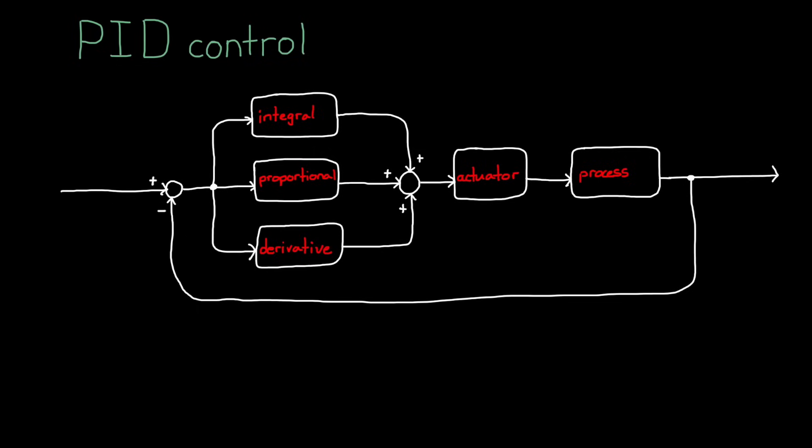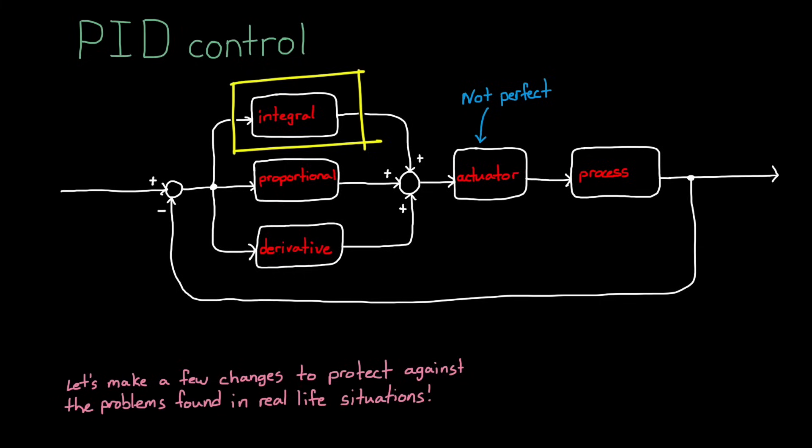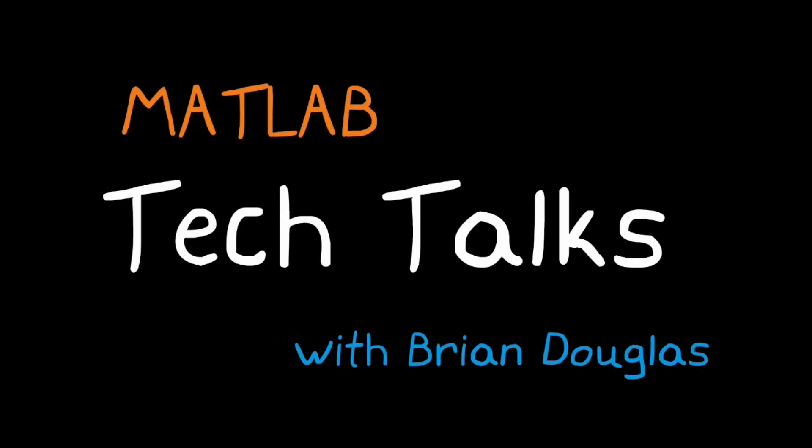So here's the problem. In real life, actuators aren't linear systems. They can't perfectly follow any arbitrary command given to them. There's backlash and rate constraints and saturation to name just a few. And these limitations can wreak havoc through an ideal PID controller like the one we described in the last video. So if you stick around, we're going to expand beyond a simple integral and make a few changes that will protect your system against one of the more common nonlinear problems found in real life situations. I'm Brian, and welcome to a MATLAB Tech Talk.